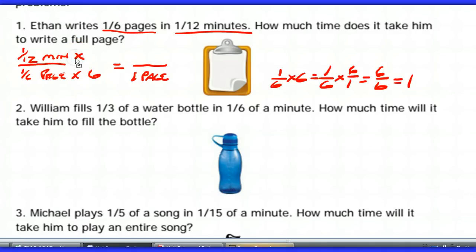But whatever you do to the top, you have to do to the bottom. So when I do one-twelfth times six, or six over one, I get six over twelve, which gives me one-half. So one-twelfth of a minute times six is going to be one-half of a minute.